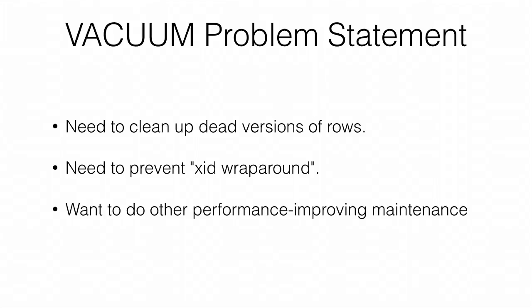We're about halfway through a talk called Understanding Auto Vacuum, and you may be wondering when the 'auto' part is going to come in. Auto vacuum is a process that kicks off vacuums for tables when it thinks they're overdue and manages those vacuums. That's about it.